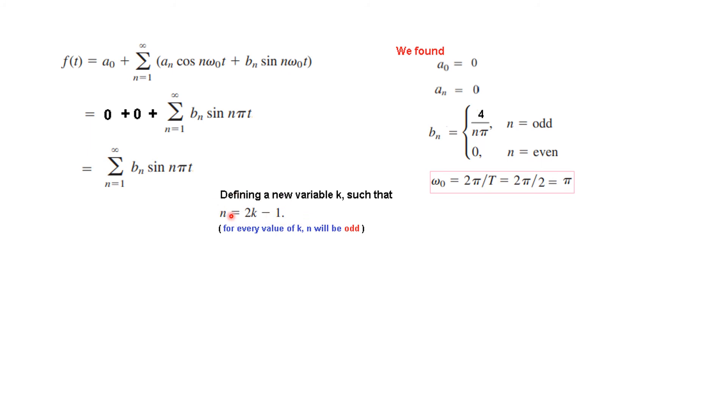So for all values of k, n is odd. So we will plug in this now to make sure that this part only remains as odd because for even all the value is 0. So we can write it like this. Then we put in this value of bn here. Sin n pi t. And the limit now we have. Instead of n we are now using k is equal to 1 to infinity. Okay and this can be rearranged and we can write it. If we take 4 over pi outside then it will be 1 over n sin n pi t.